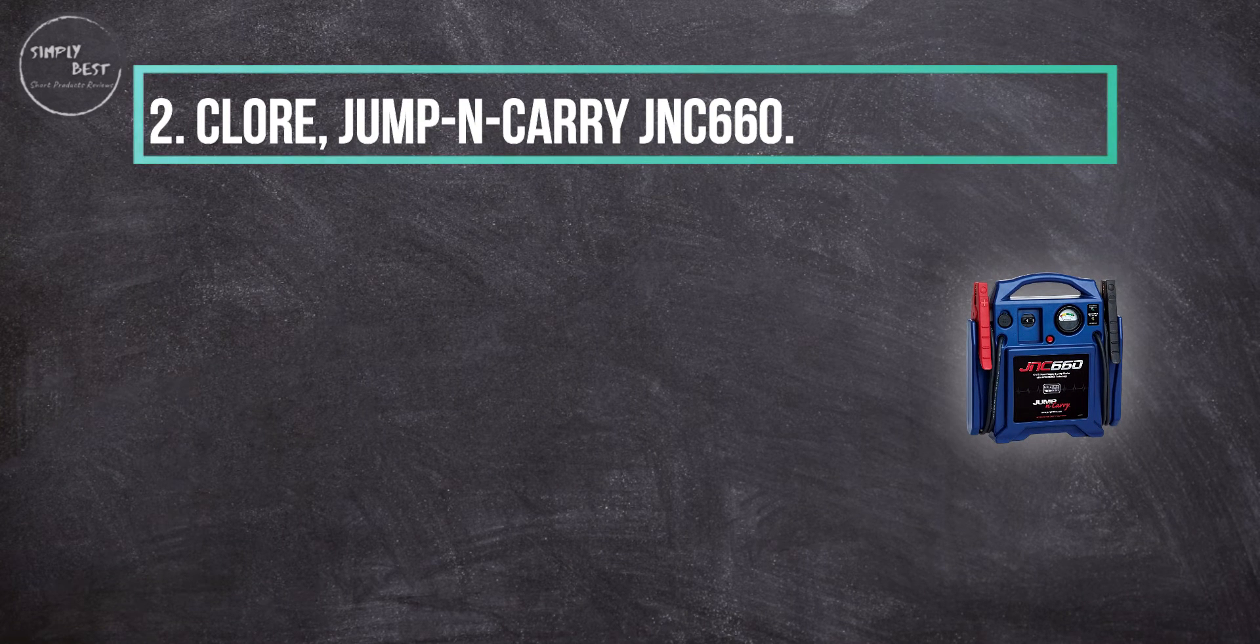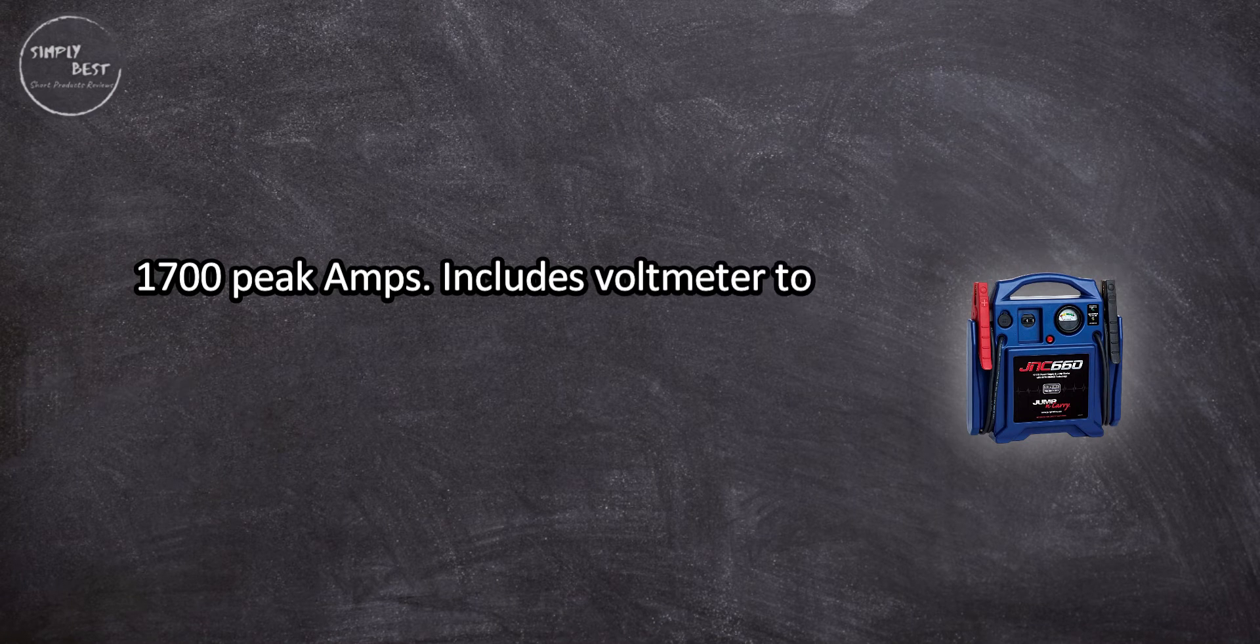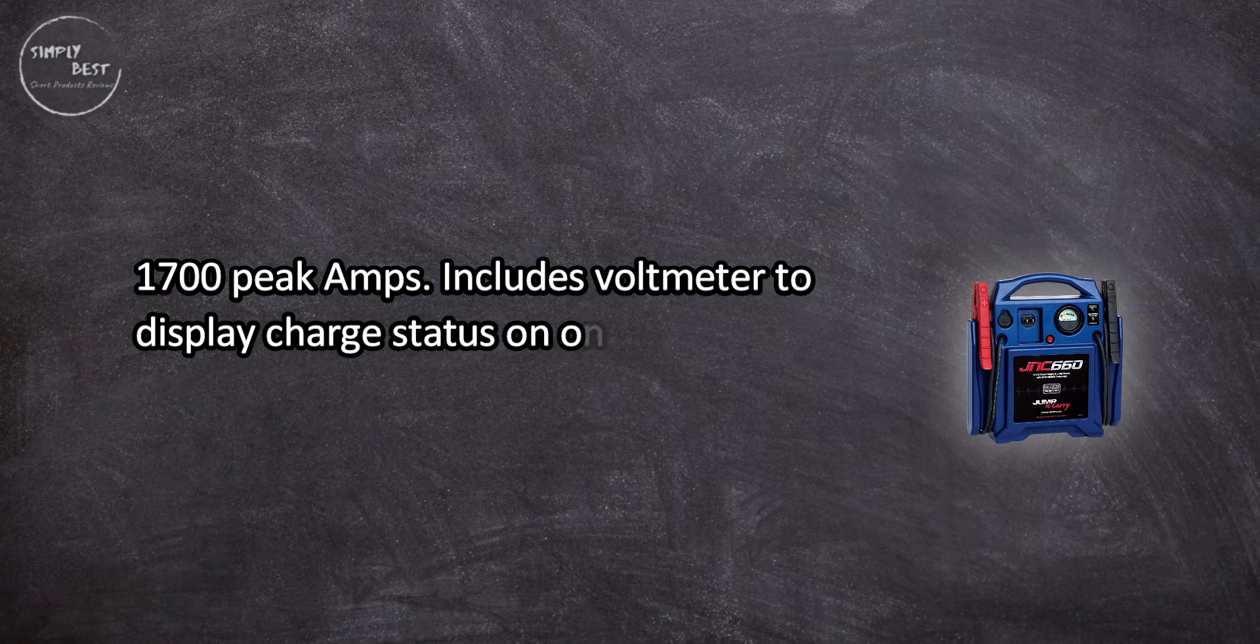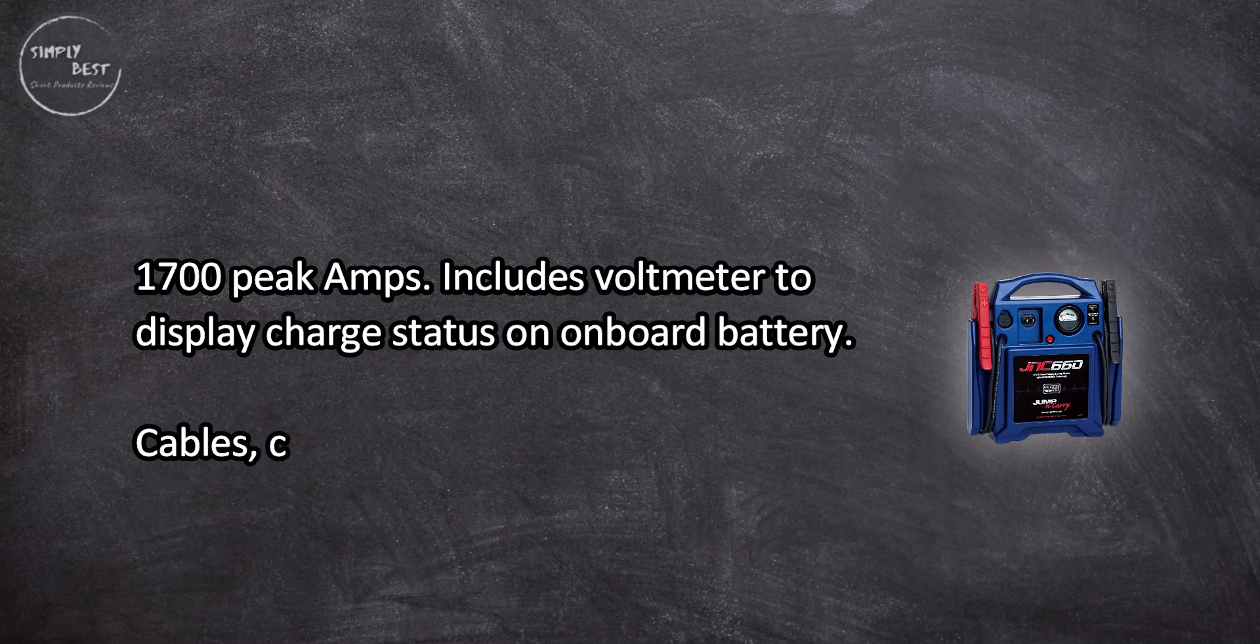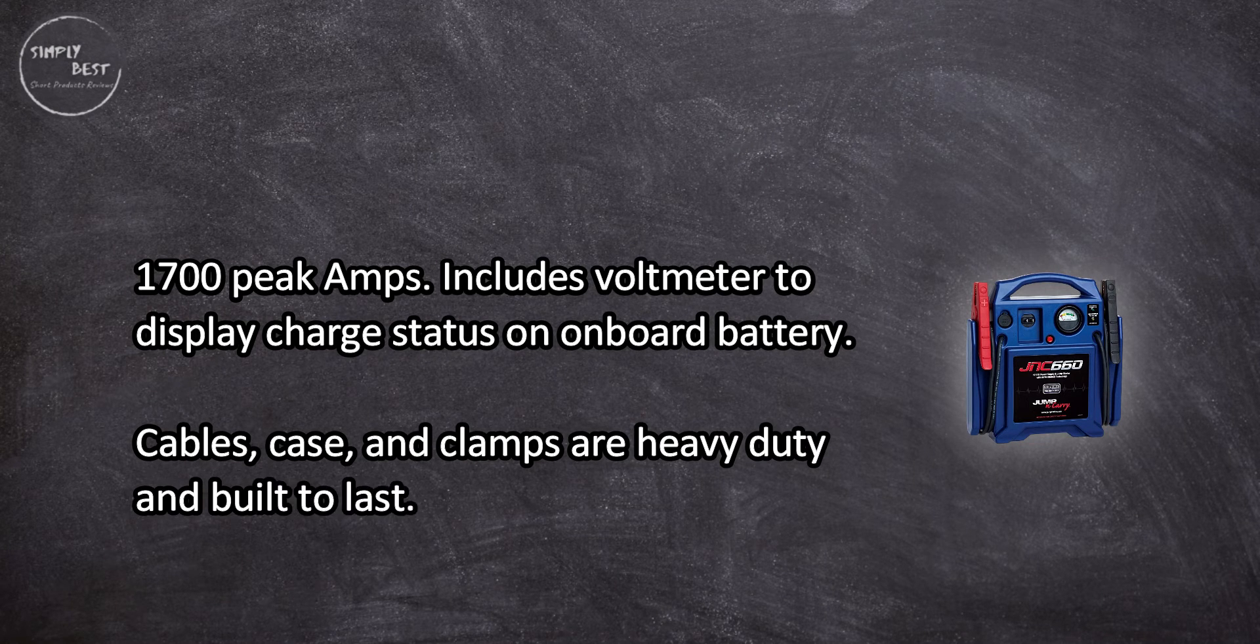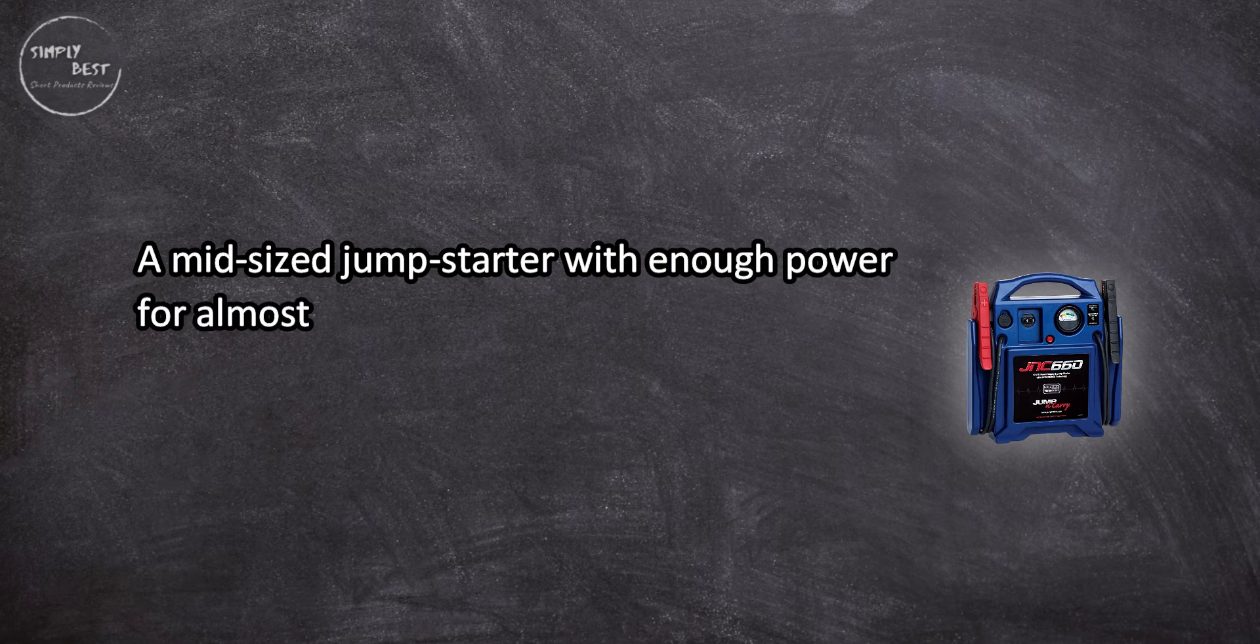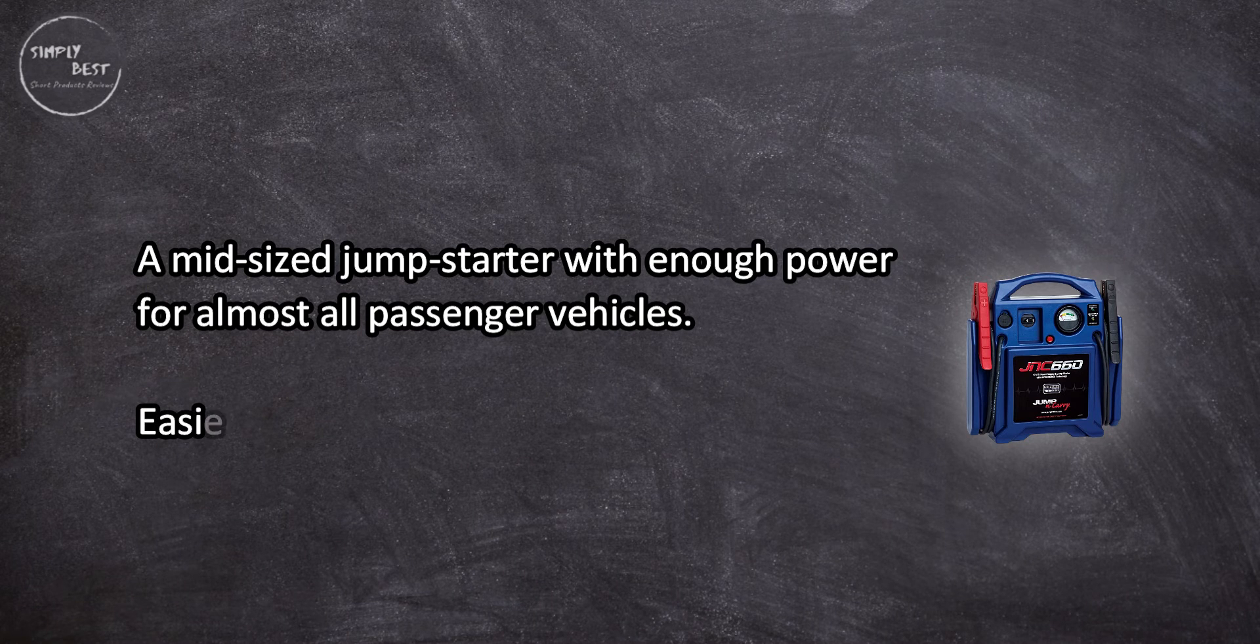1700 peak amps. Includes voltmeter to display charge status, onboard battery cables, and heavy-duty case and clamps built to last. A mid-sized jump starter with enough power for almost all passenger vehicles, with the easiest-to-use features.